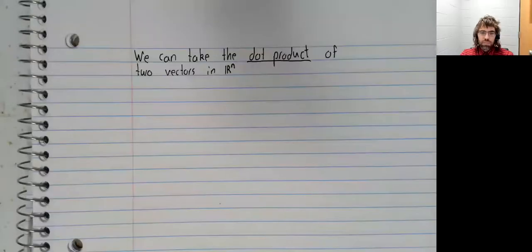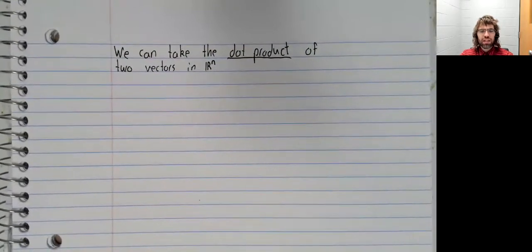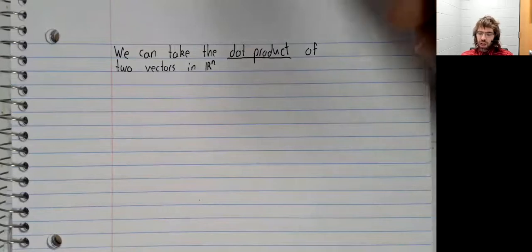In this video, we're going to define something called the dot product. We can take the dot product of two vectors in Rn.